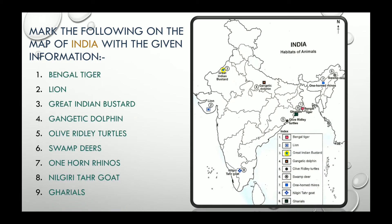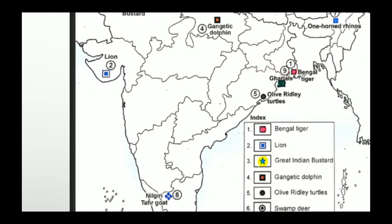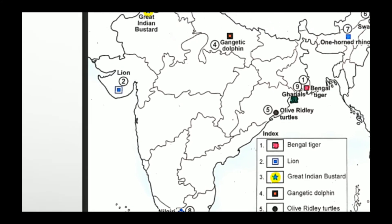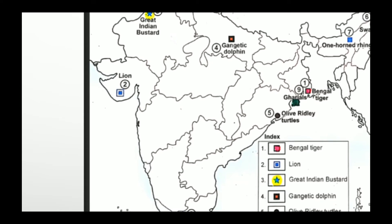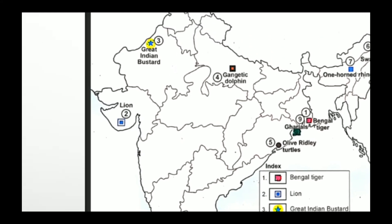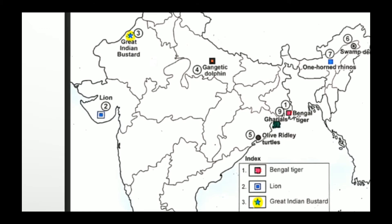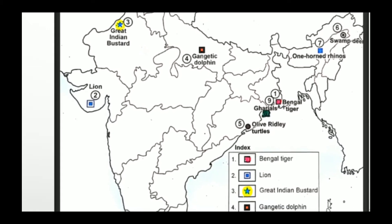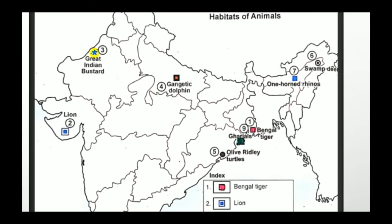Now, mark the following on the map of India — it is already marked. We are going to mark: Bengal tiger, lion, great Indian bustard, Gangetic dolphin, olive ridley turtle, swamp deer, one-horned rhino, Nilgiri tahr goat, and gharial. Number one — Bengal tiger — is found in the coastal areas of West Bengal, also called Sundarbans. Number two is lion, found on the west side of the country, that is in Gujarat, the Gir forest. Number three, the great Indian bustard, is found in Rajasthan. Number four, the Gangetic dolphin, is found in Uttar Pradesh in River Ganga.